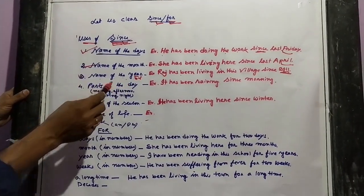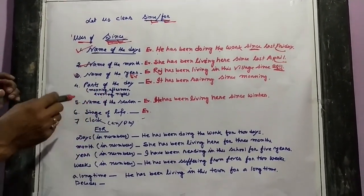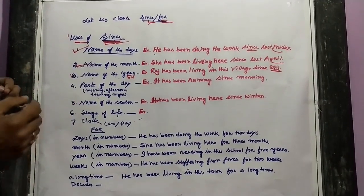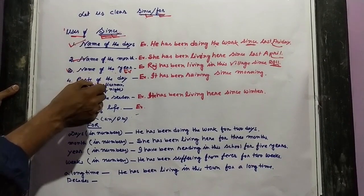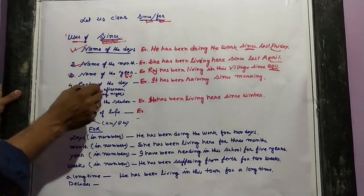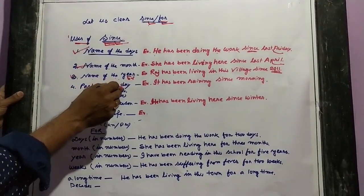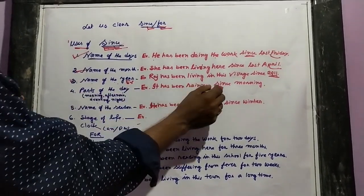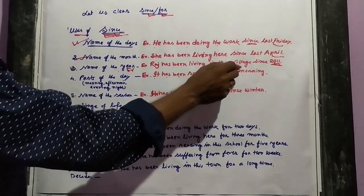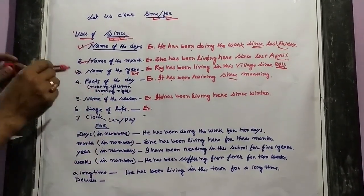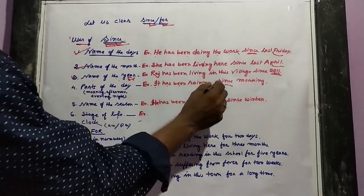Next, we use 'since' with parts of the day. Parts of the day means morning, afternoon, evening, and night. For example: 'It has been raining since morning.' If the sentence refers to any part of the day, then you have to use 'since'.